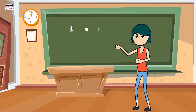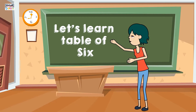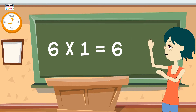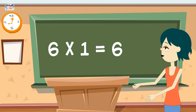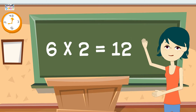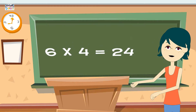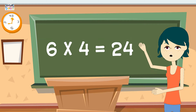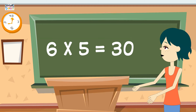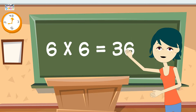Hello Kids! Let's learn the table of 6. 6 1's are 6, 6 2's are 12, 6 3's are 18, 6 4's are 24, 6 5's are 30, 6 6's are 36.